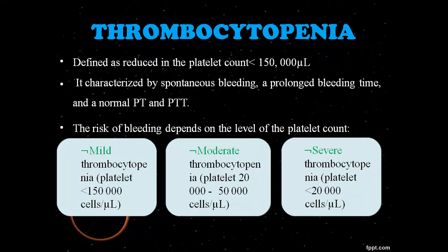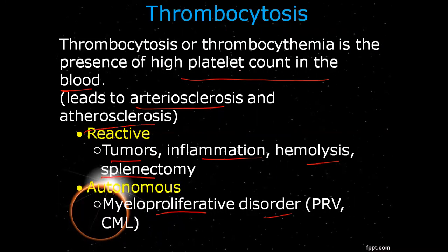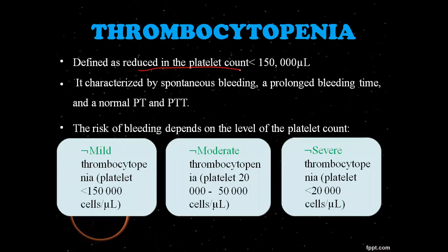Thrombocytopenia is defined as a reduced platelet count. Whereas thrombocytosis involves an elevated amount of platelets, thrombocytopenia involves a reduced amount of platelets. When the platelet count is less than 150,000, we can have spontaneous bleeding, prolonged bleeding time, and normal PT and PTT.